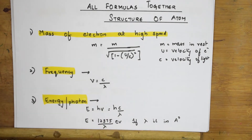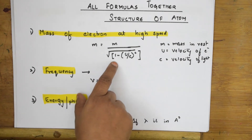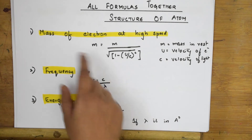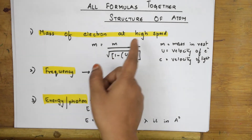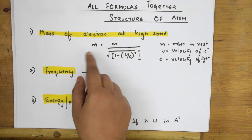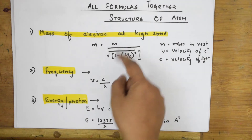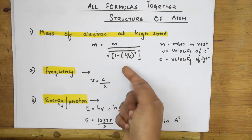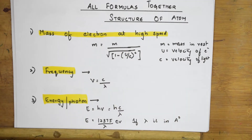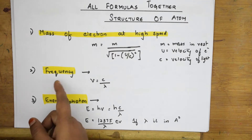The first formula is the mass of an electron at high speed. This is the formula you apply when a question asks you to find the mass of the electron at high speed. The formula is m = m₀ / √(1 - v²/c²). You can see the formula directly — this is what we apply for the mass of the electron.